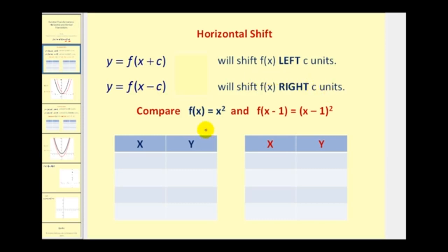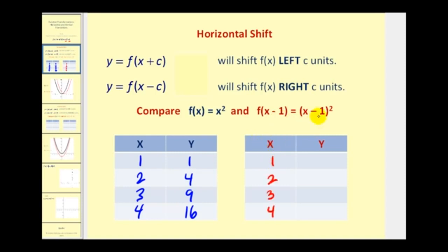One way to get a feel for this is to compare a table of values for f of x and f of the quantity x minus 1. Let's choose x equals 1, 2, 3, 4. For f of x, we square x: 1, 4, 9, 16. For f of x minus 1, we subtract 1 from the input and then square it: 1 minus 1 squared is 0; 2 minus 1 squared is 1; 3 minus 1 squared is 4; and 4 minus 1 squared is 9.